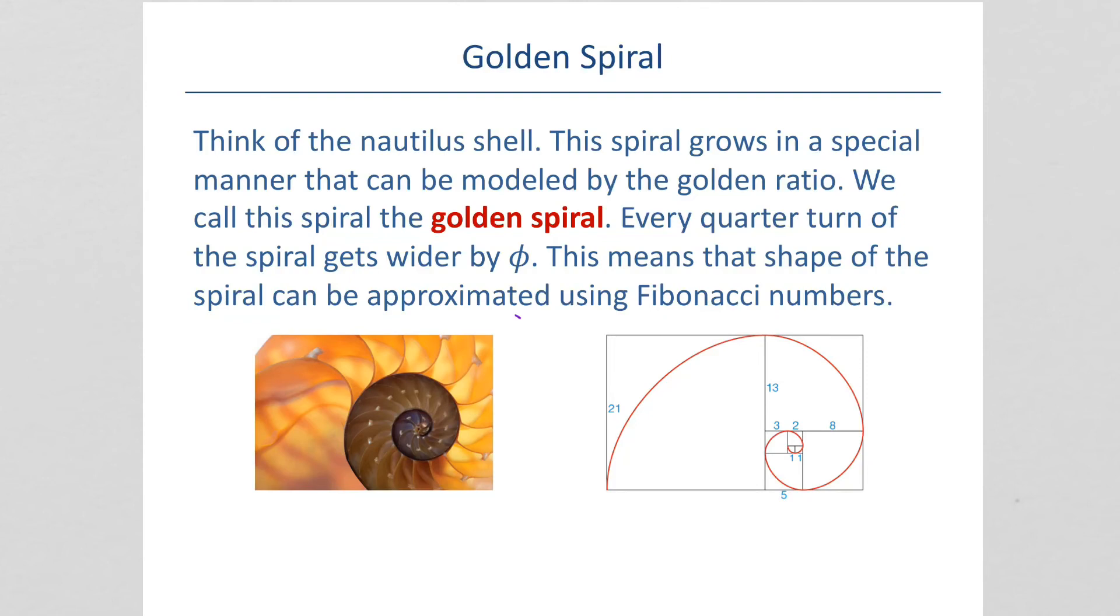Think of a Nautilus shell. You've seen these before, right? This spiral grows in a special manner that can be modeled by the golden ratio. We call this spiral the golden spiral. Every turn, every quarter turn of the spiral gets wider by phi. So, if you start in the inside, we have 1, 1, another quarter is 2, another quarter is 3, another quarter is 5, another quarter is 8, 13. This means the shape of the spiral can be approximated using the Fibonacci numbers.